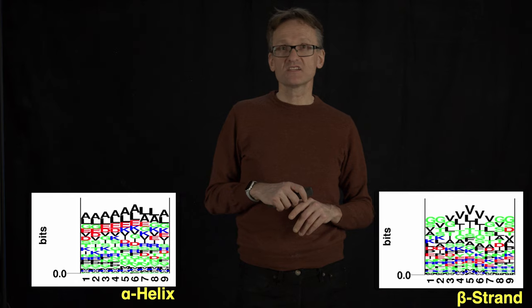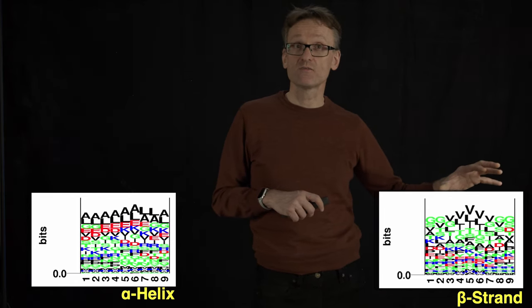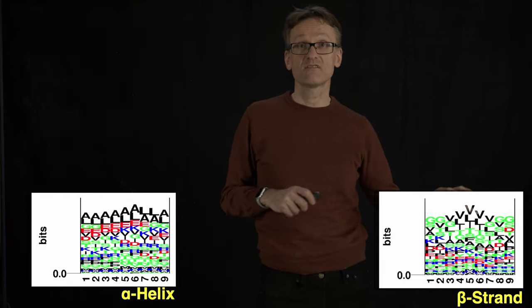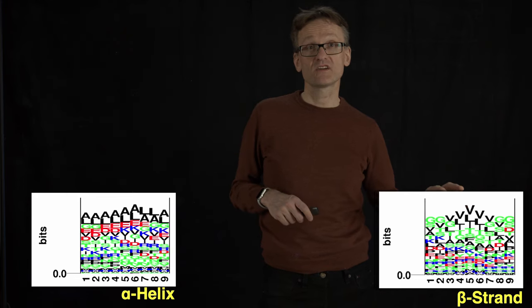We can do the same things for beta sheets. You see here that there is a slightly different pattern here, valines in particular. Valines don't like to be in an alpha helix as much.